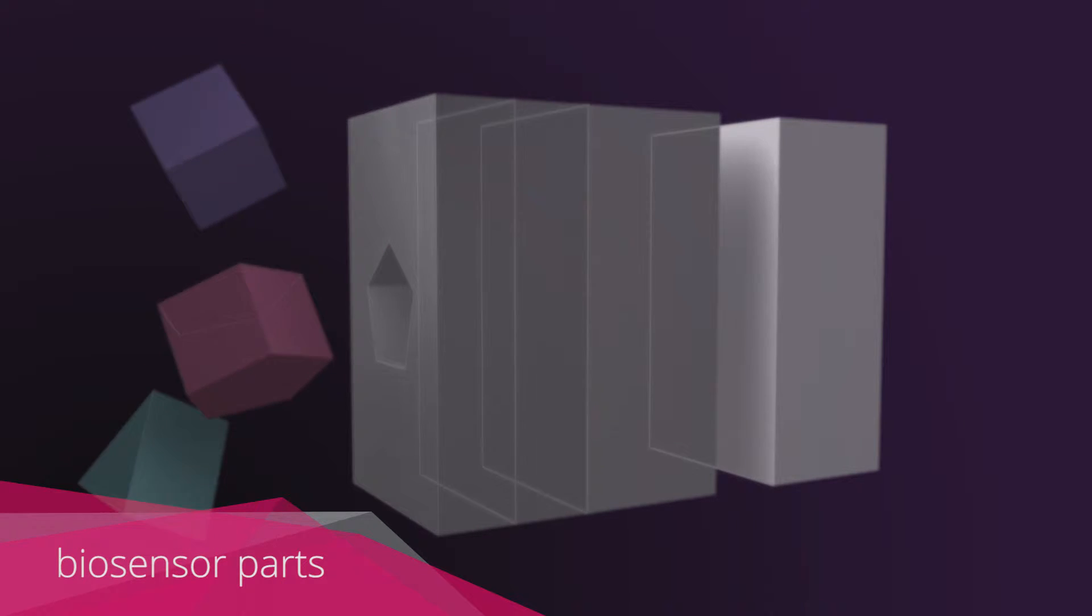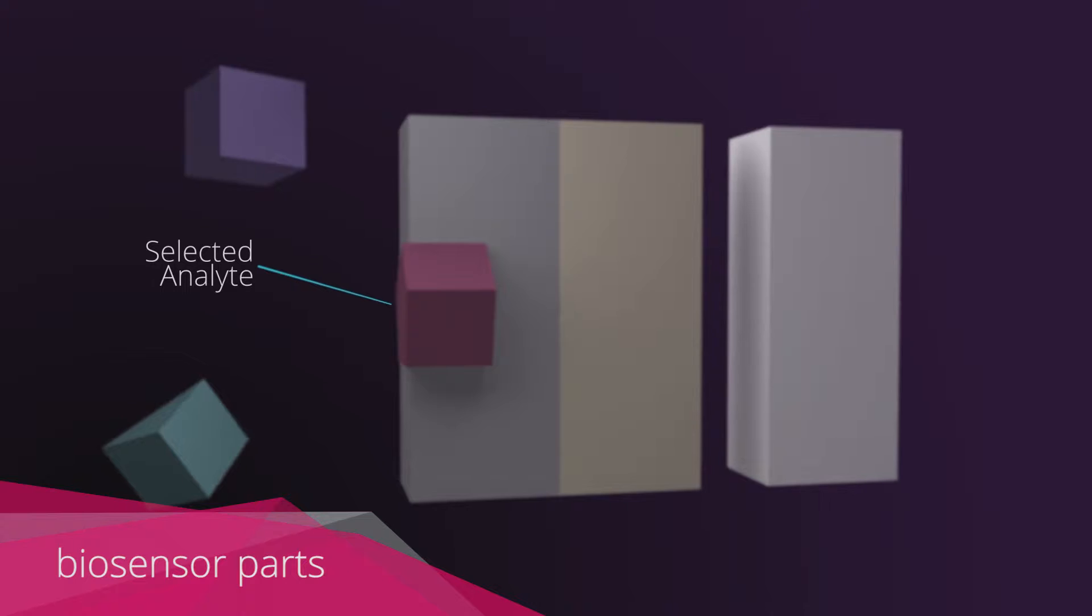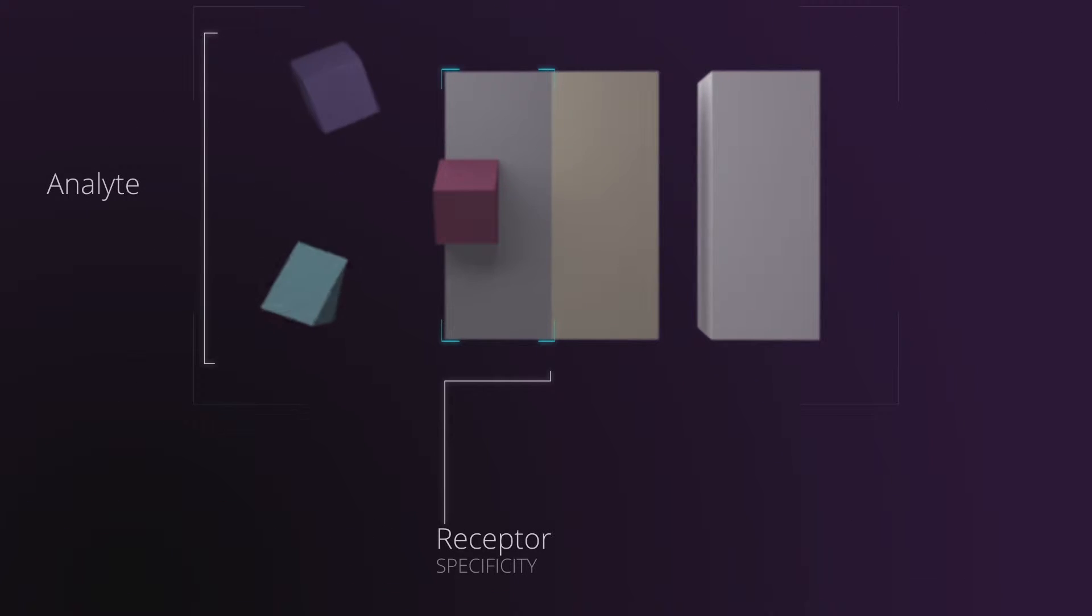Let's see what a biosensor is. A biosensor is composed of several parts. On one hand, there is a biological element known as a receptor, able to recognize a selective analyte of interest. This part defines how specific the biosensor is. This receptor is linked to a transducer element, commonly known as a label.